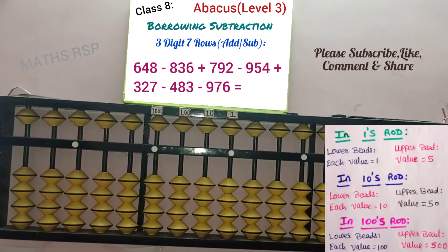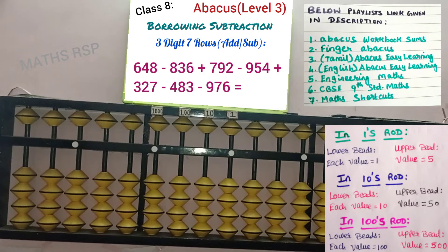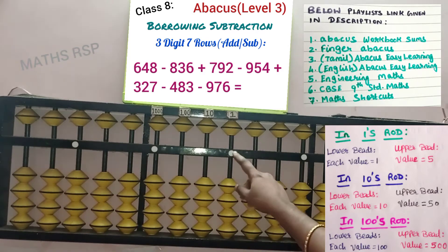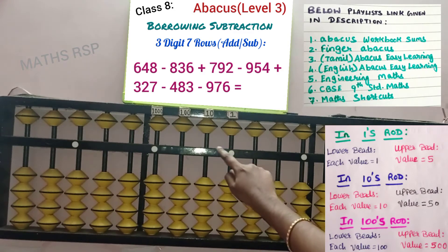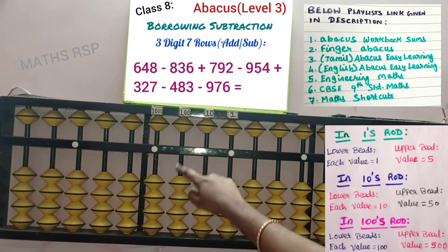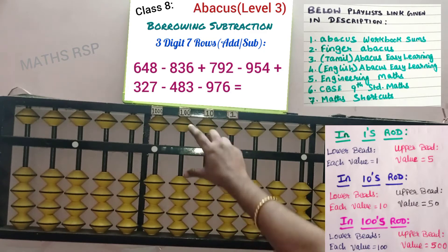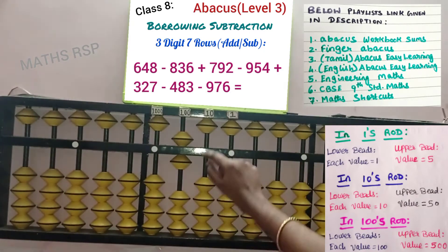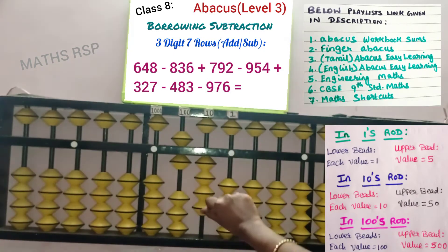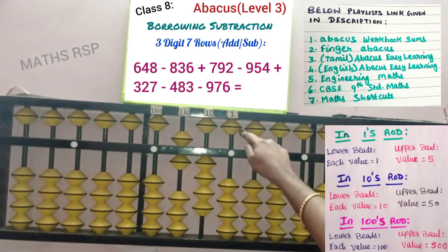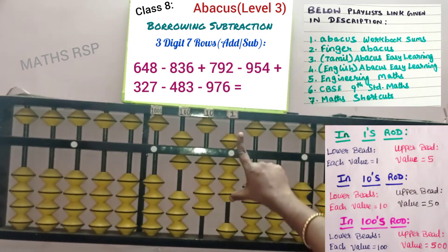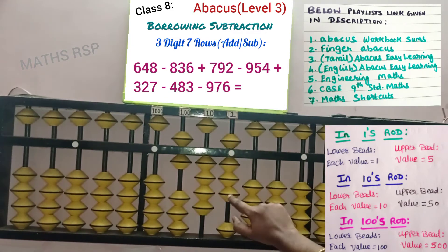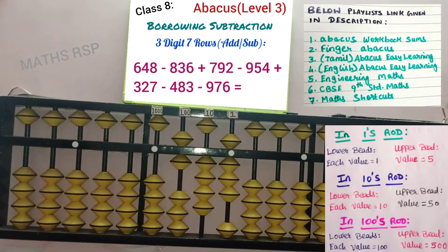Now let's take the first row: 648. It's a 3-digit number, so take 3 dot steps from 1 star — 1, 2, 3. Add 6 here in the 100 strad, and 4 in the 10 strad, and 8 in the 1 strad. So 648 is added.